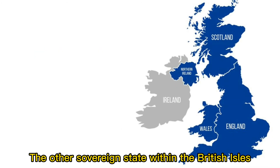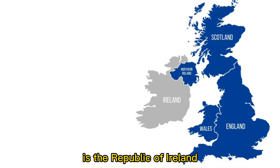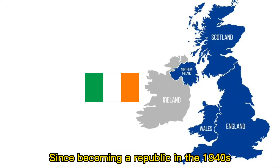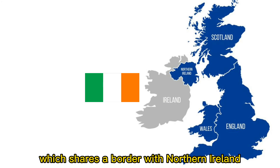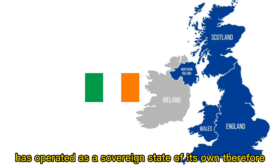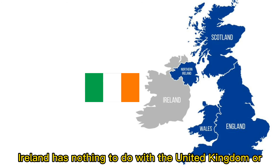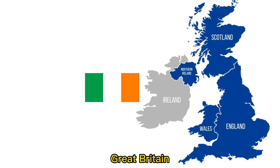The other sovereign state within the British Isles is the Republic of Ireland. Since becoming a republic in the 1940s, the Republic of Ireland, which shares a border with Northern Ireland, has operated as a sovereign state of its own. Therefore, Ireland has nothing to do with the United Kingdom or Great Britain.